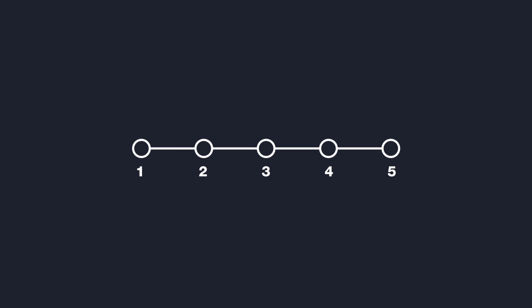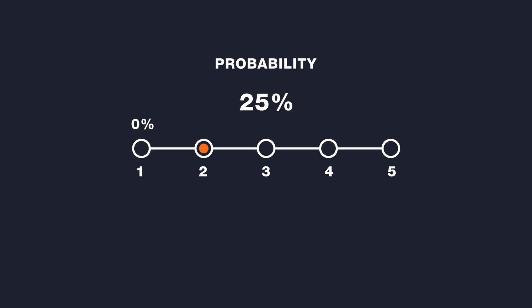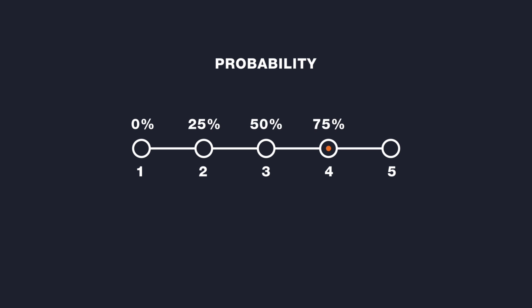For each risk, convert the probability of occurrence to a percentage. If you are using a scale from 1 to 5, you could convert the scale such that a score of 1 translates to a 0% probability, a score of 2 translates to 25% probability, a score of 3 is 50%, 4 is 75%, and a score of 5 is 100% probability.